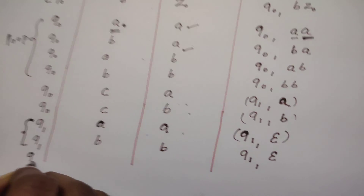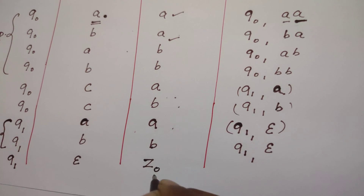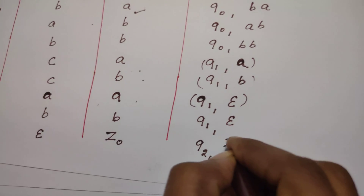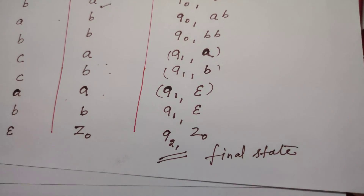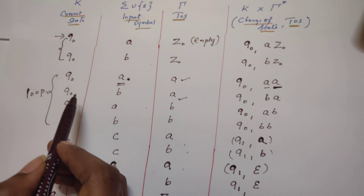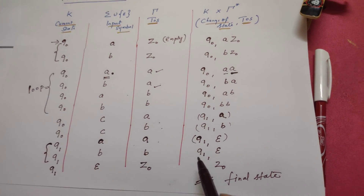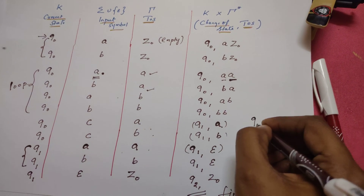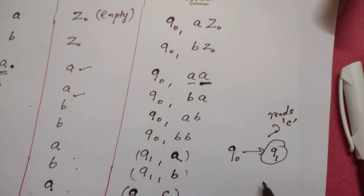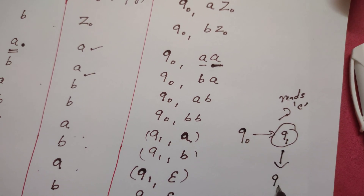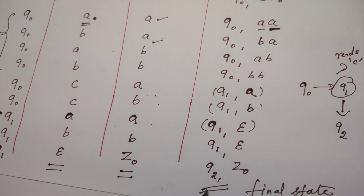After reading the entire second half, the PDA is again in state Q1. It then reads epsilon, indicating the end of the string. At that point, we expect the stack to be empty (Z0 at bottom). The state changes to Q2, retaining Z0 as it is. Q2 is the final state. So Q0 is the initial state, Q1 is the intermediate state, and Q2 is the final state — three states total. The transition from Q0 to Q1 occurs on reading C, and from Q1 to Q2 on reading epsilon with an empty stack.